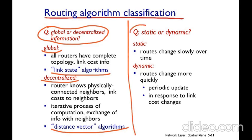Another classification is static or dynamic routing. Static routing means that paths are not commonly changed over time — the same routing configuration persists. In dynamic routing, there are failures in network links, links that go down, or increases or decreases in traffic, so paths must be changed frequently.